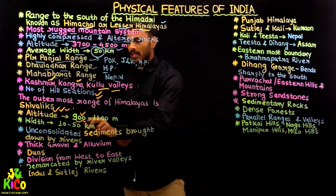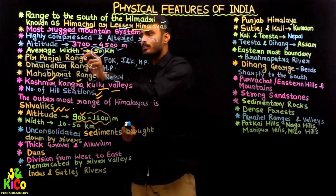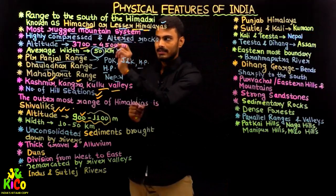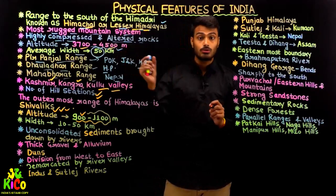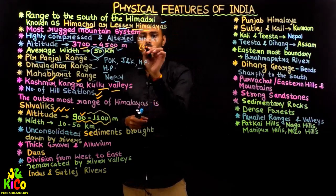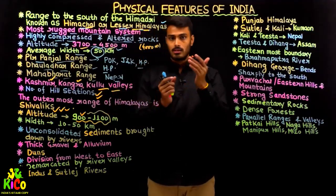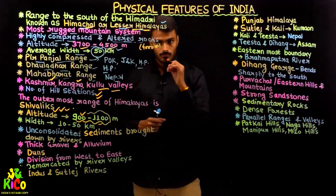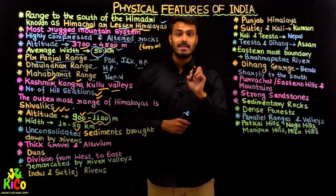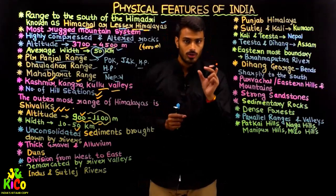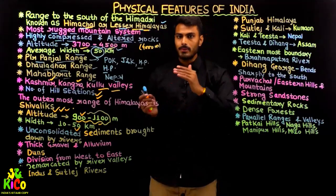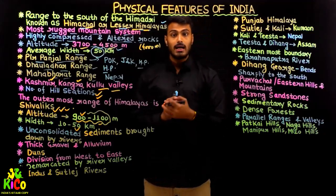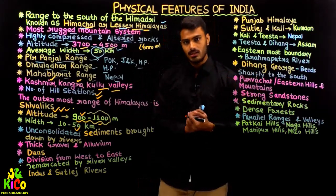Comparing heights: the Greater Himalayas average around 6,000 meters, the Himachal range is 3,700 to 4,500 meters — roughly 4,000 meters on average — and the Shivalik is about one-fourth of that, around 1,000 meters. The width varies from 10 to 50 kilometers depending on the area. In Himachal Pradesh and Uttarakhand, the width is as great as 50 kilometers, while in Arunachal Pradesh it can be as little as 10 kilometers.